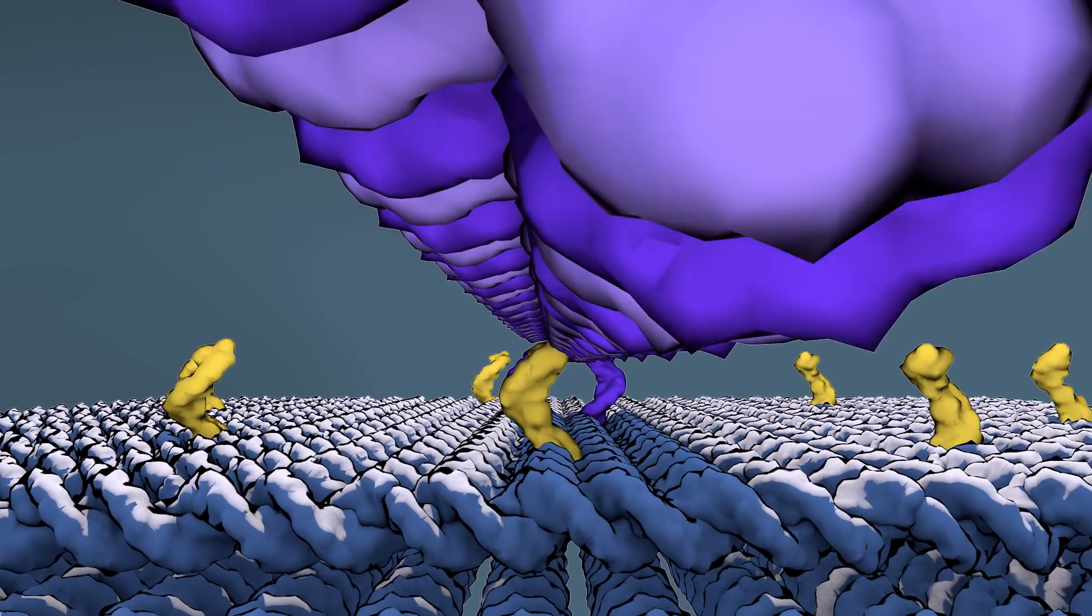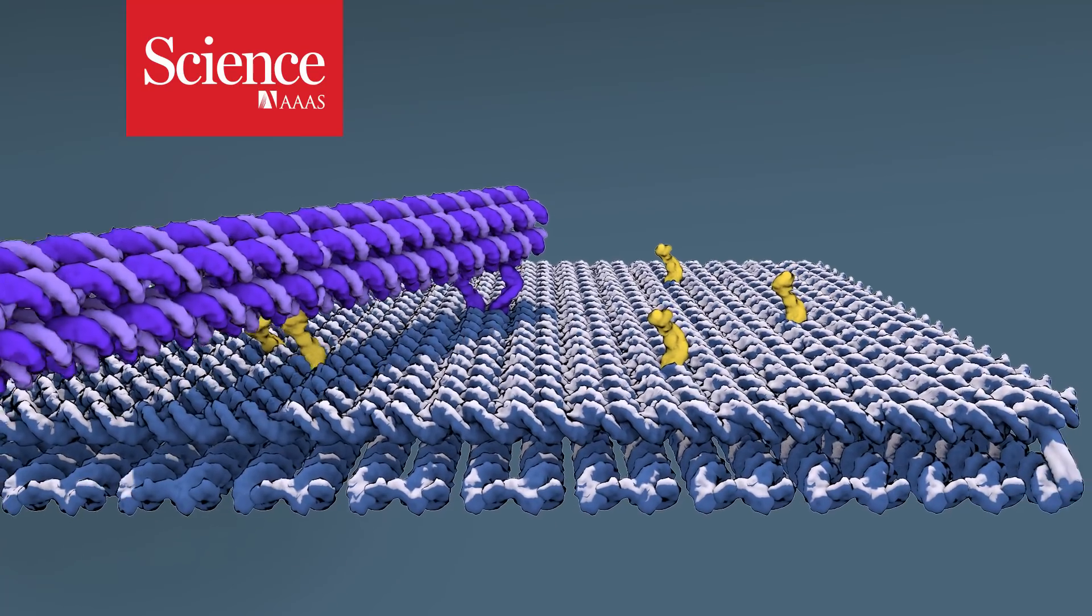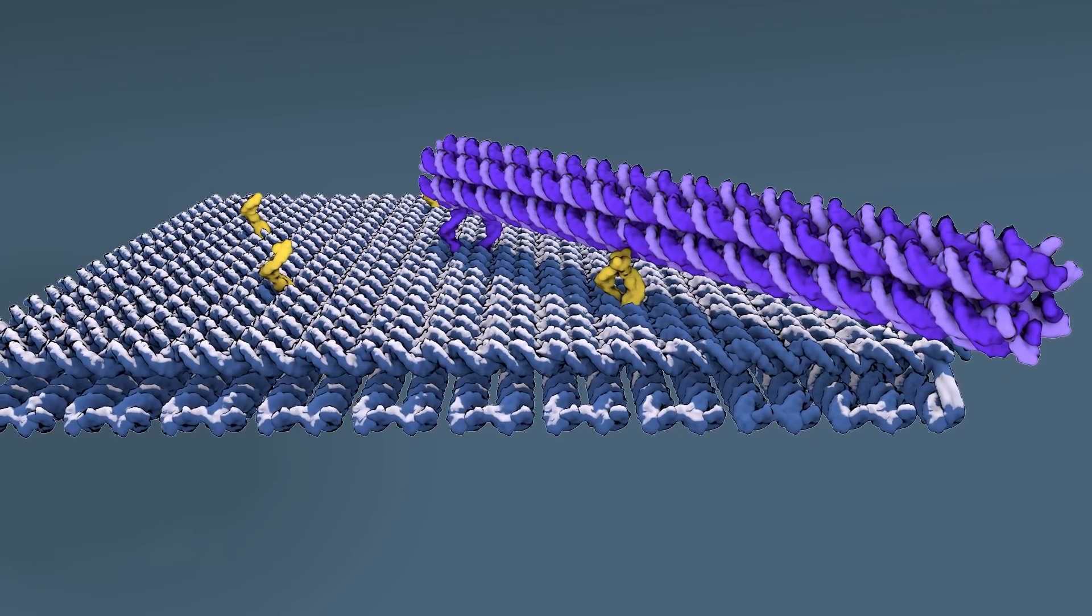DNA robots just got a remote control. This microscopic robotic arm is self-assembled and made of folded DNA.